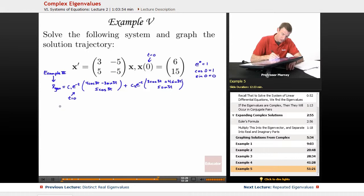So x of 0, plugging in 0 everywhere, is c1 times e to the 0, so that's just 1, times 4 cosine, so that's 4, minus 3 sine which is 0, so [4; 5].